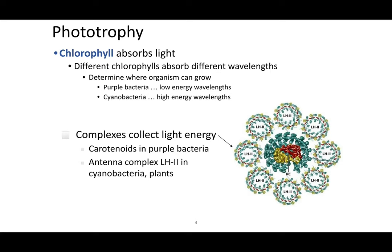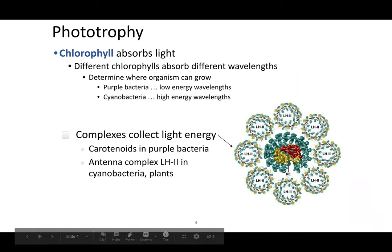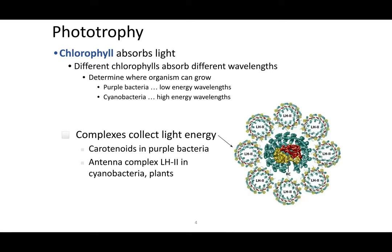Depending on what wavelength a bacterium can absorb, it determines where it can grow. Typically, our purple bacteria grow in very low energy wavelengths, in soil for example. The light harvesting complex collects light energies and essentially bounces them around between all the different chlorophylls until it reaches a reaction center, and that's when it generates energy.